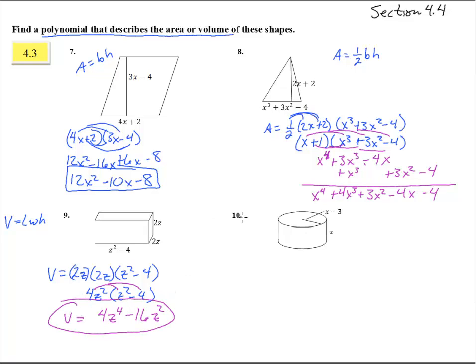Good. Okay, number 10, ooh, this one's a little bit trickier. You remember volume of a cylinder, it was like pi r squared h. I think that's what it was, pi r squared h was the volume of a cylinder.